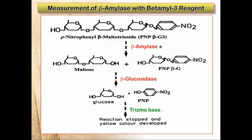The beta-amylase betamyl-3 reagent contains p-nitrophenyl-beta-maltotrioside in the presence of beta-glucosidase. The substrate is not hydrolyzed by this enzyme until beta-amylase cleaves the maltose unit. As soon as this is released, the beta-glucosidase can immediately release the beta-linked glucose, which releases p-nitrophenol into solution. When the reaction is stopped by adding an alkaline solution such as Trisma base, the yellow phenolate color is developed.